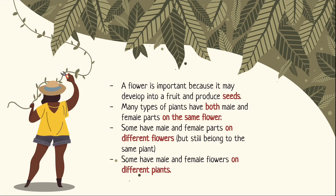As you can tell from the four steps of the reproductive cycle of a flowering plant, the flower is a very important part of the plant. It may develop into a fruit which could produce seeds that develop into a young plant through germination. Many types of plants have both female and male parts on the same flower; some have male and female parts on different flowers, and some on different plants.